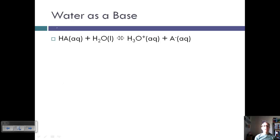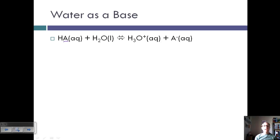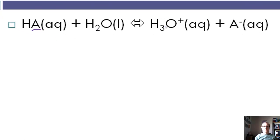We have, in general, some acid HA plus water producing our hydronium ion and then A-. So this would be considered our acid. Water in this case is our base. And then we have what's called the conjugate acid and the conjugate base.